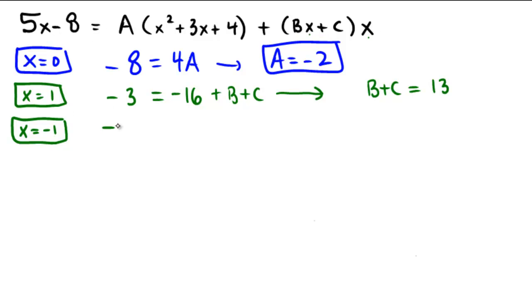Negative 1 squared is 1. 1 minus 3 is negative 2. Negative 2 plus 4 is positive 2. And then when I multiply that by A, which is negative 2, we'll get a negative 4. So I'm looking at a negative 4 there.